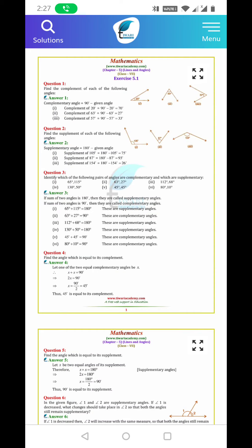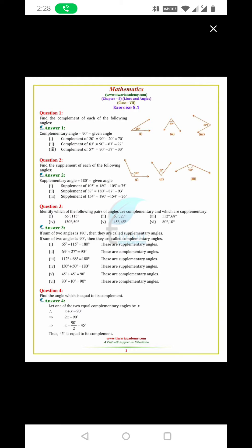So here it's 105. So 180 minus 105 equals 75. Supplement of 87 degree is equal to 180 degree minus 87 is equal to 93 degree. Supplement of 154 is equal to 180 minus 154 degree is equal to 26 degree.